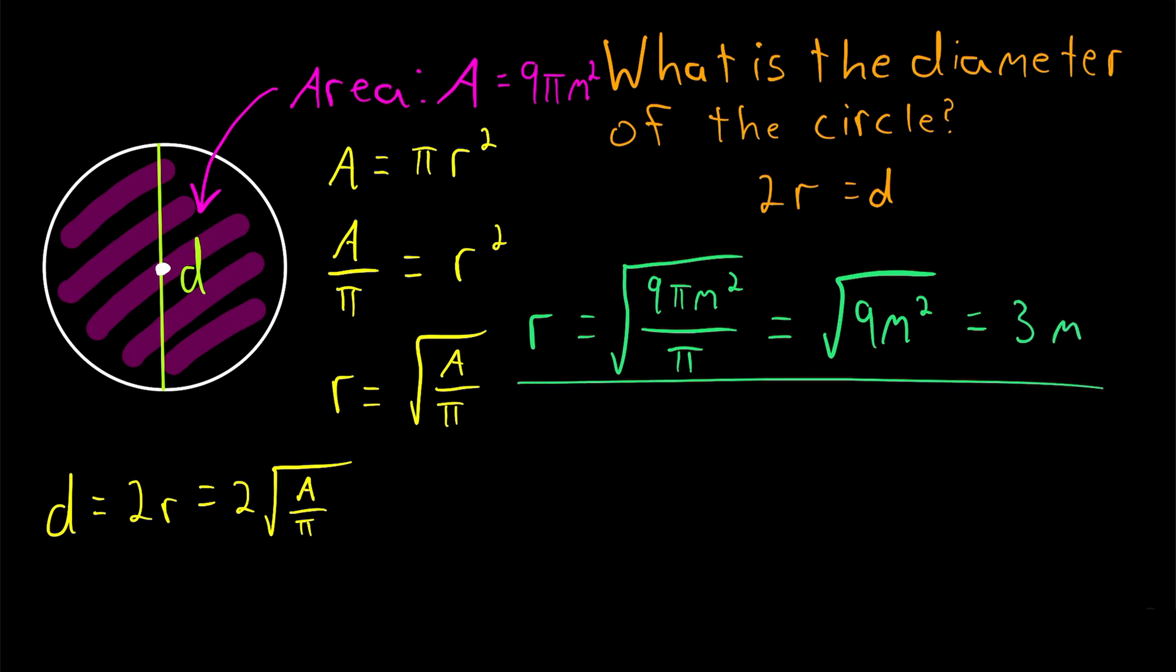That's how we find the radius of a circle given the area. And then remember, the diameter of a circle is just 2 times the radius. So in this case, the radius is 3 meters, so the diameter is 2 times 3 meters, which is 6 meters. And that's how we find the diameter given the area.